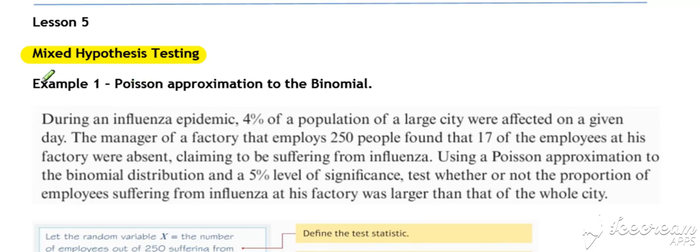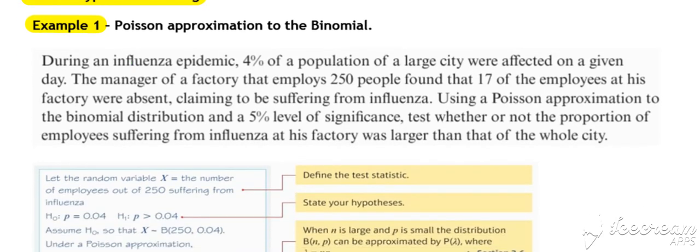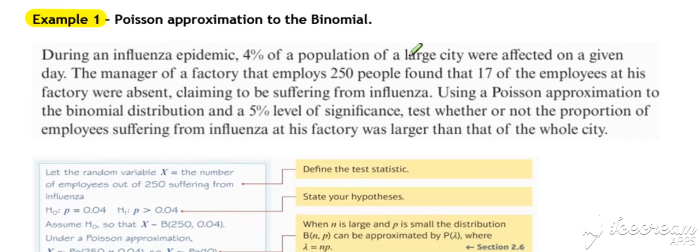In this first example, we're going to look at this case. We've dealt with when a Poisson distribution can be used to approximate a binomial. It's possible that scenario could arise in hypothesis testing. So we have here essentially a binomial hypothesis test with a probability value p of 0.04.